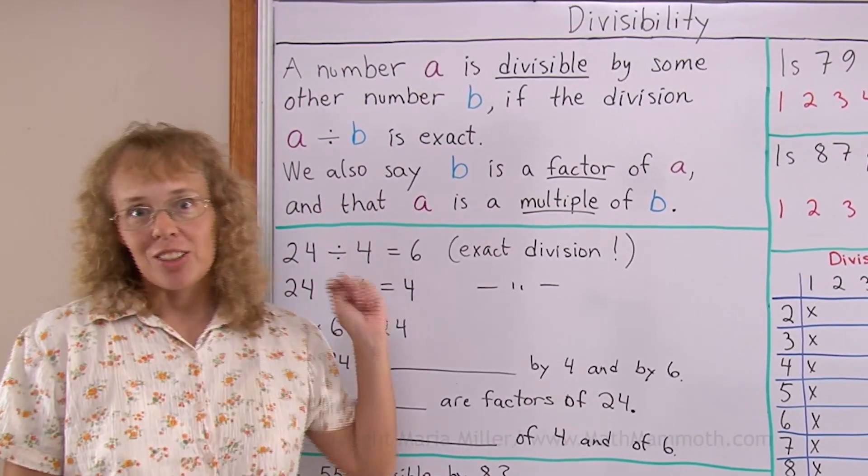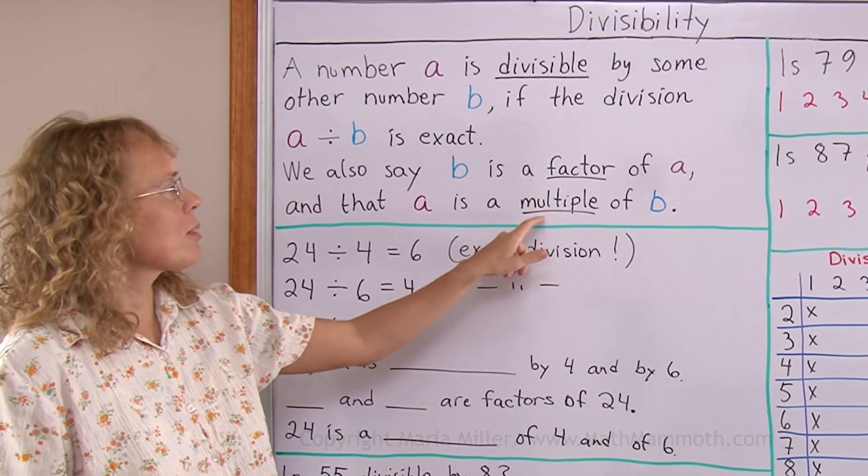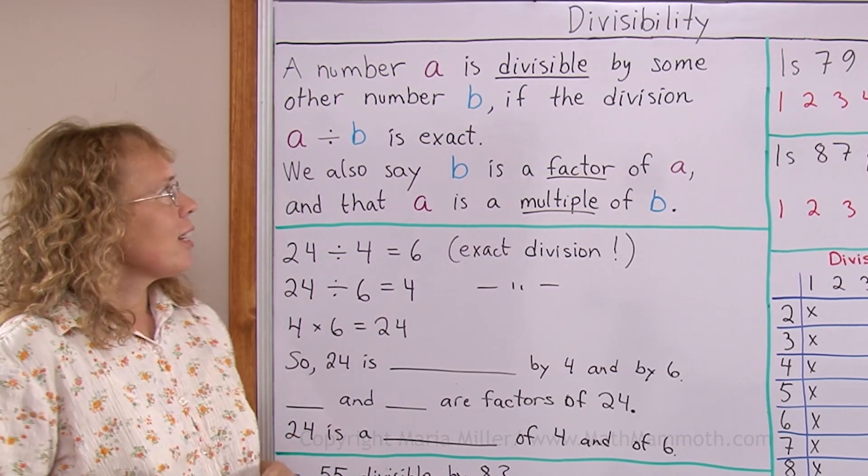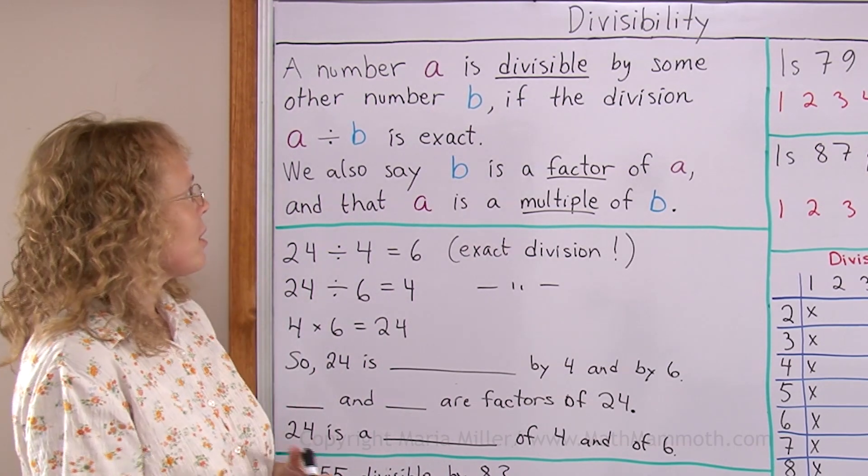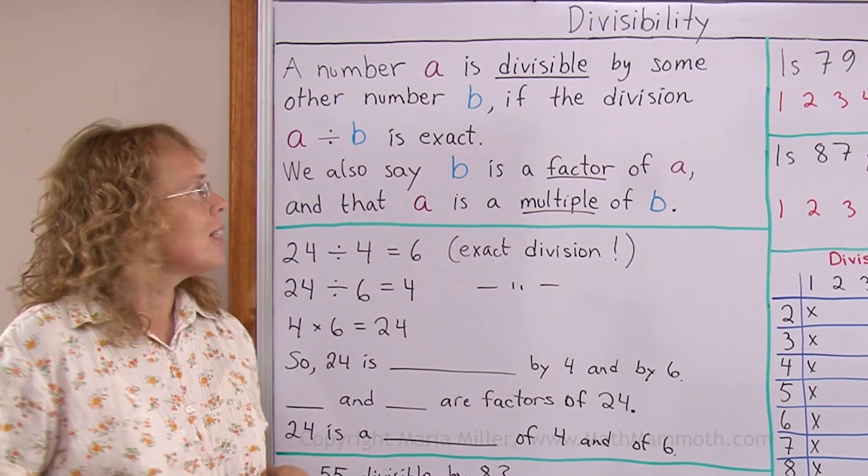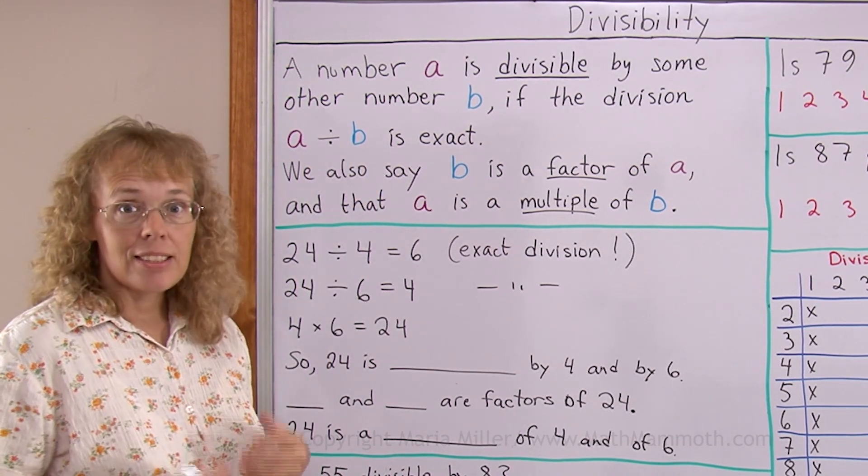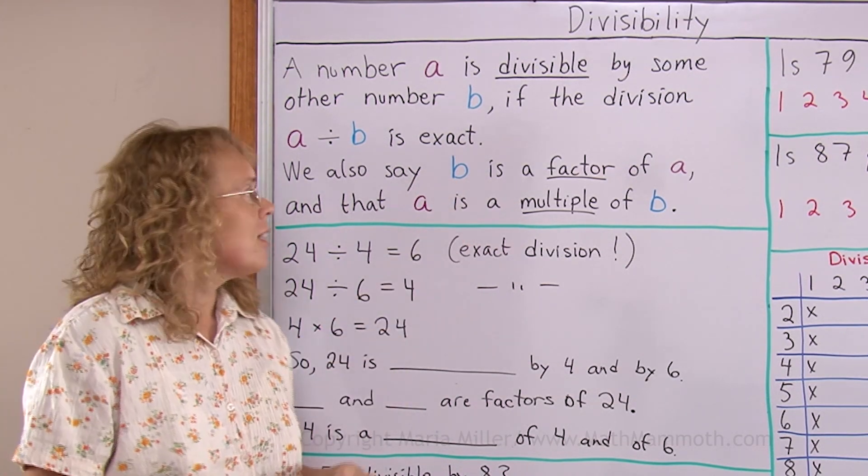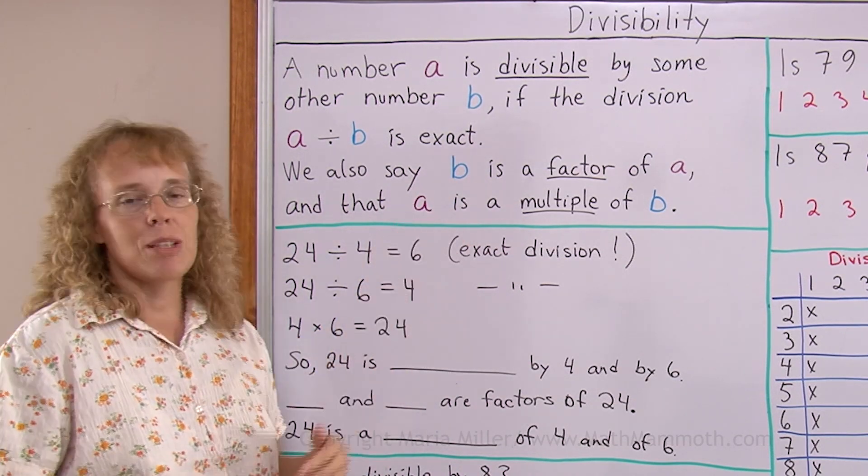And here's my definitions here. We're gonna study these three words: multiple, factor, and divisible. A number a is divisible by some other number b if the division a divided by b is exact. And then in that case, if it is so, then we also say that b is a factor of a and that a is a multiple of b.